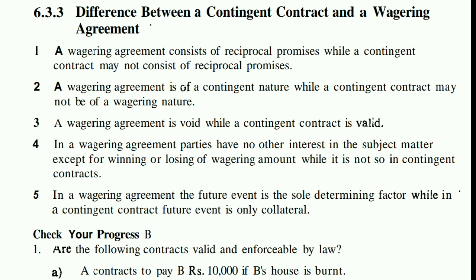A wagering agreement is of a contingent nature, while a contingent contract may not be of a wagering nature. A contingent contract may not be a wagering contract.